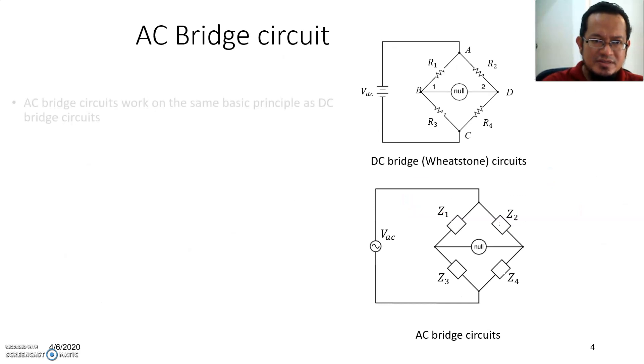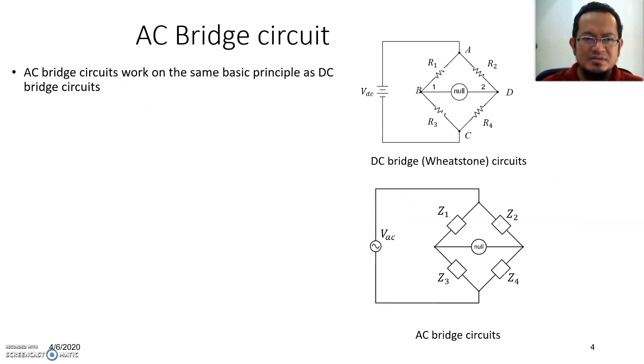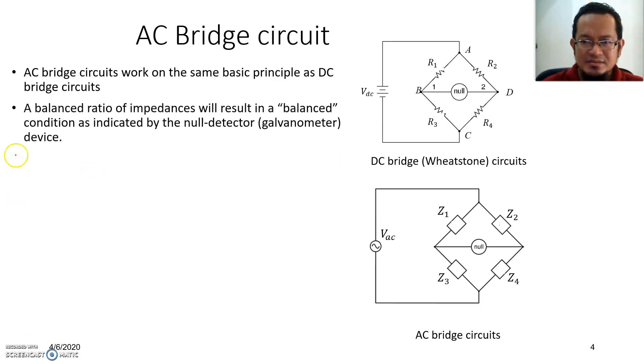The working principle of AC bridge is pretty much the same as DC bridge circuit. You can see on top here this is a DC bridge Wheatstone bridge, and this is an AC bridge. The circuits are pretty much similar to each other except for now we have impedances and a voltage source. When we talk about the working principle, the balanced ratio of impedances results in a balanced condition as indicated by the null detector.